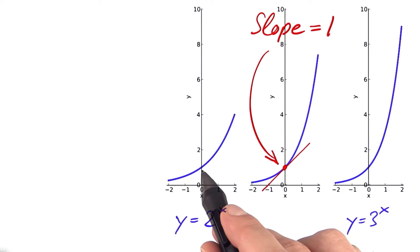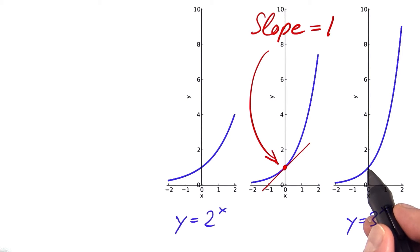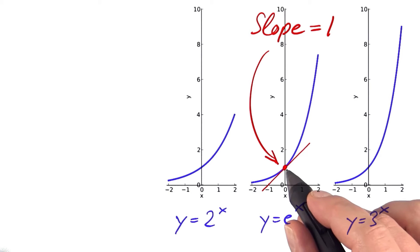it's not hard to imagine that somewhere in between 2 and 3 there is a number called e, Euler's number, so that e to the power of x has a slope of exactly 1 at x equals 0.